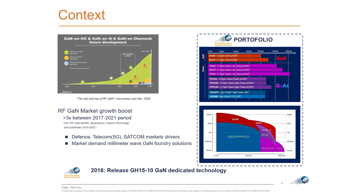We have two GaN processes: GH25 and GH15. As mentioned yesterday, there is increasing demand for GaN, especially GaN-on-SiC, which is the main technology for millimeter wave and RF applications. It's growing strongly and is mainly used for defense, telecom, 5G, fixed wireless access, and satcom. We have many customers using our process in foundry mode, which motivated the release of the 0.15 micrometer process in 2016.